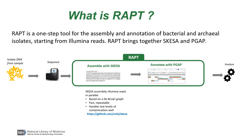SKESA assembles Illumina reads in parallel. It is based on the de Bruijn graph, it's fast, it's repeatable, and it handles low levels of contamination well. You can learn more about SKESA on our GitHub site.